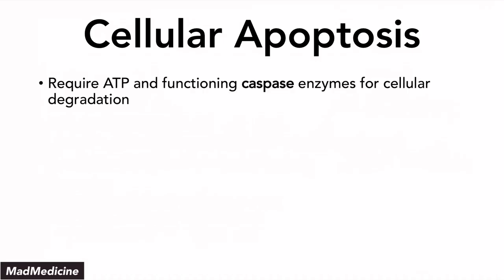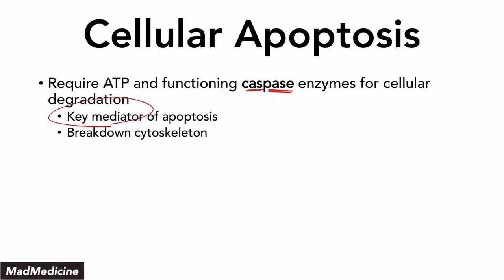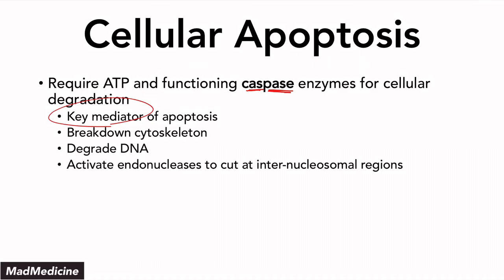One thing to remember is that because apoptosis requires ATP, you also need functioning caspase enzymes for cellular degradation. They function as the key mediator — very important. The caspases are the key mediator for apoptosis, and they're going to break down the cytoskeleton as well as degrade DNA by activating endonucleases that cut at internucleosomal regions.